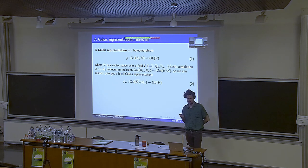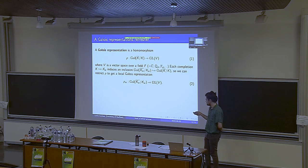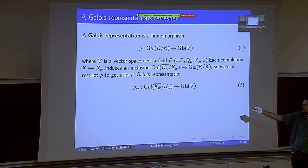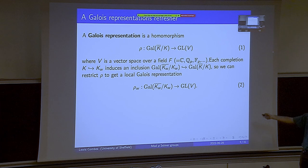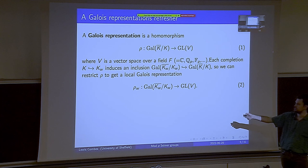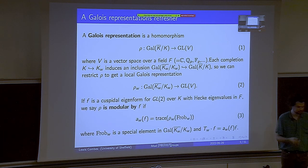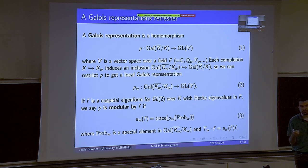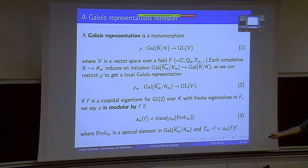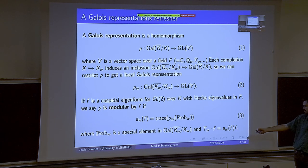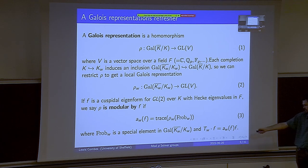Each completion of our number field k at each of its primes w induces an inclusion of Galois groups. The absolute Galois group of the completion sits inside the absolute Galois group of the number field. So we can restrict rho to get a local representation rho_w, which is just a group restriction. A Galois representation is called modular if it is attached to a modular form. The attaching happens by choosing the Frobenius element in our local Galois group, looking at its trace, and this trace should match the Hecke eigenvalue of some modular form whose Hecke eigenvalues sit inside the field F.